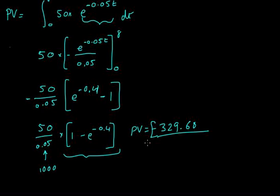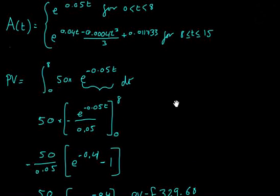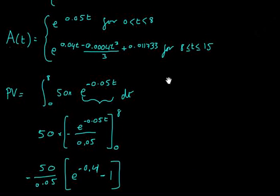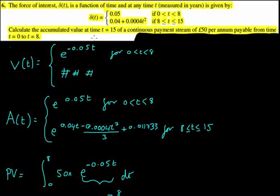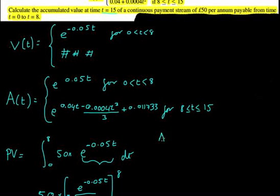How do we find the accumulated value after 15 years? Well, all we do is take the present value, this value over here, and multiply it by our accumulation factor, which is after, what does it ask us? It says the accumulated value at time t equals 15, so that time, we've just got to sub 15 into here, or subbing 15 as t in all of this, so we'll work that out as well. So let's find, what does A of 15 equal?